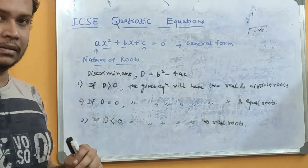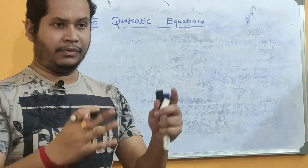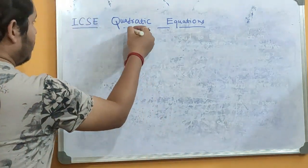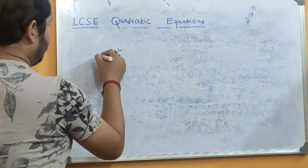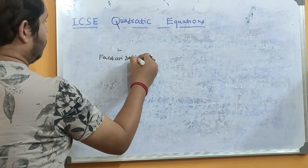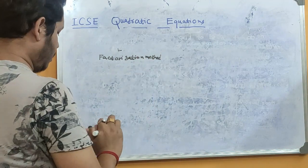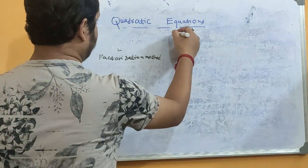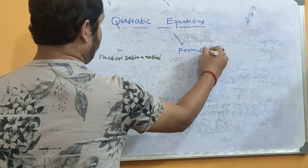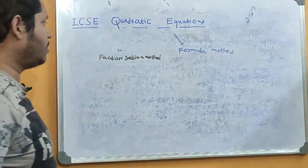Those are the three cases for nature of roots. Now let's talk about the solution of a quadratic equation. There are basically two methods we learn for ICSC council: the first one is called the factorization method and the second one is called the formula method.